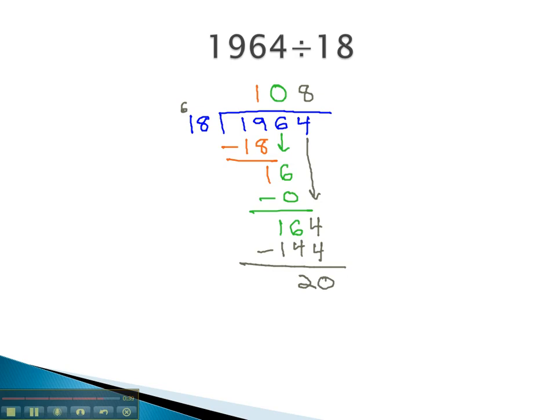We know our number is correct if this number is smaller than our front number. It's not, so we need to try again. How about we try a bigger number, 9.